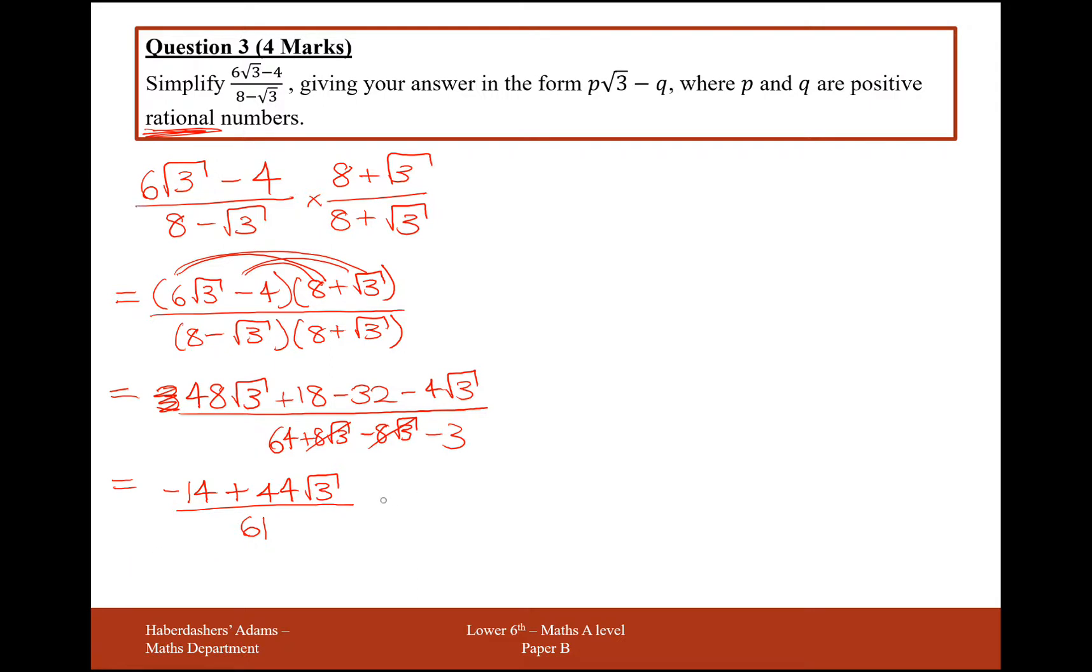Now, I don't believe this cancels down anywhere, so splitting this up, we're going to get minus 14 over 61, add 44 root 3 over 61.